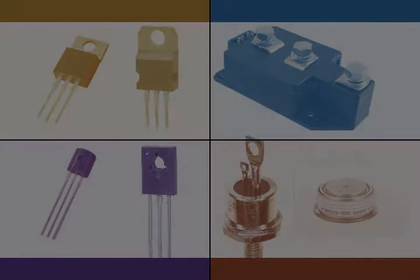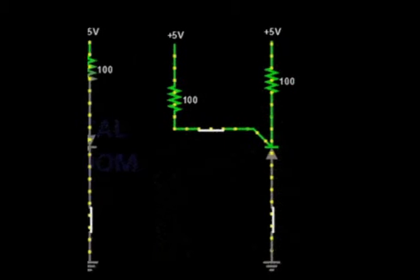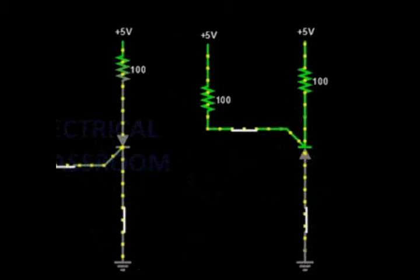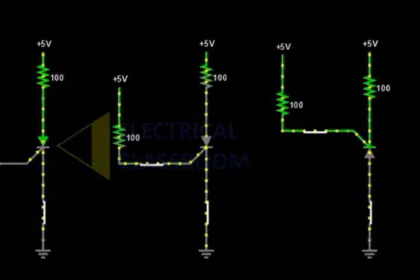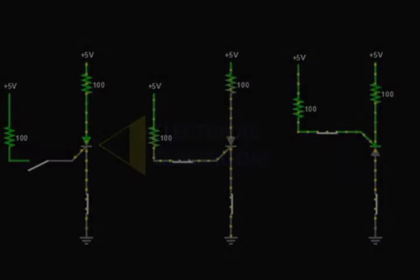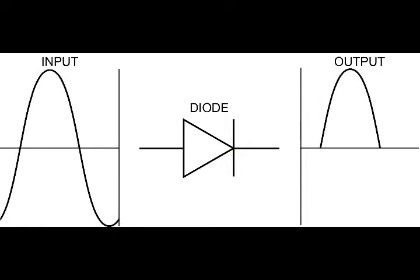When the anode base of thyristors is negative relative to their cathode, the middle NP junction is forward biased but the two outer PN junctions are reverse biased, and the thyristor behaves much like a normal diode.